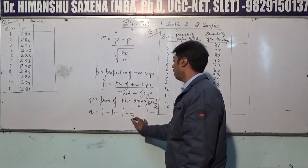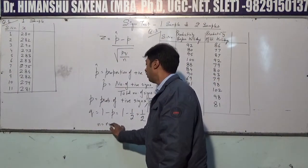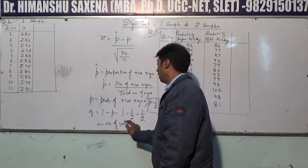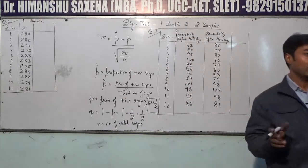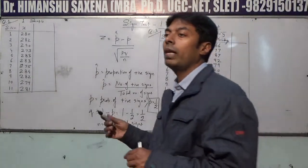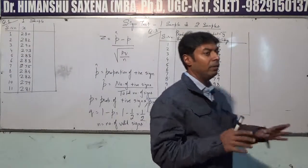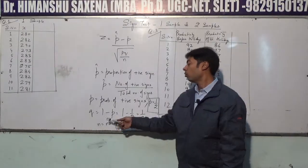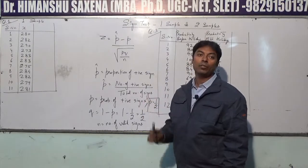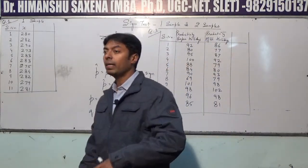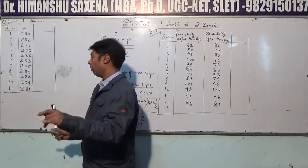Q is 1 minus 1/2, which equals 1/2. N denotes the number of valid signs — we exclude zeros because a zero is neither a positive sign nor a negative sign. The total of positive and negative signs gives us N, the total valid signs used in the formula.